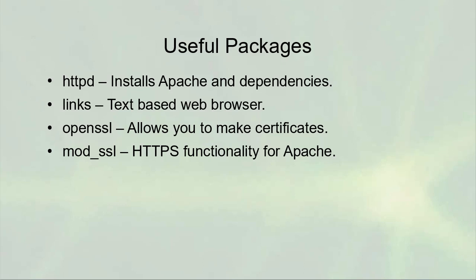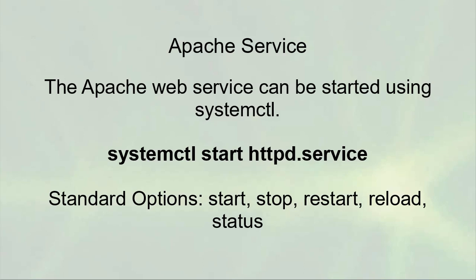The Apache web service can be managed using systemctl. You can use `systemctl start httpd`, and also stop, restart, check status, or reload. The reload option is particularly useful: it sends a signal to the server prompting it to reread its configuration files. Since Apache runs as multiple processes, the main service rereads the config, respawns new child processes, and lets the old ones finish — so you can change configurations without taking the server down.